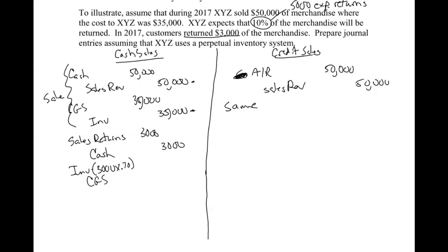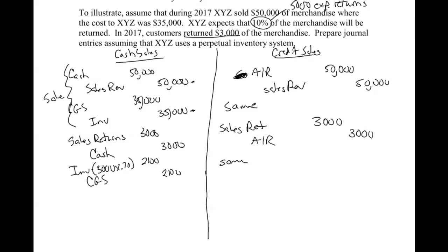On the credit sales side, we'll still have sales returns for $3,000, but this time we will credit back their accounts receivable. The second journal entry for inventory and cost of goods sold is the same as the cash side.